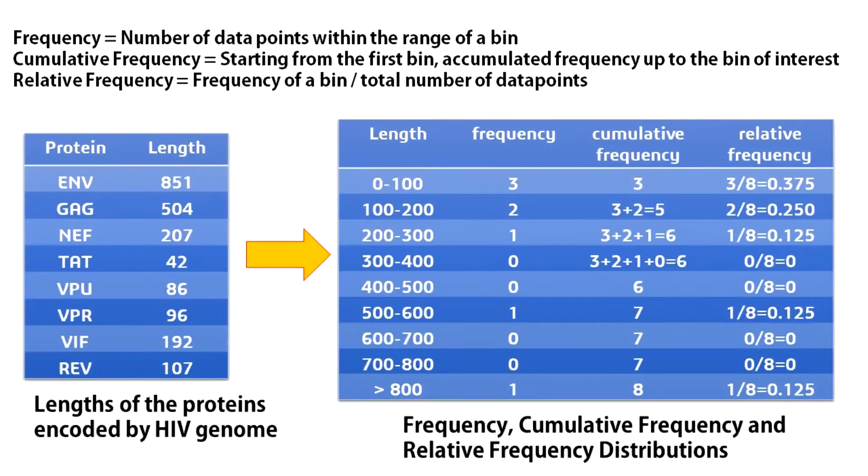What is a frequency distribution? Well, frequency distribution is a statistical table which shows the values of the variable arranged in the order of magnitude, either individually or in groups, and also the corresponding frequencies side by side.